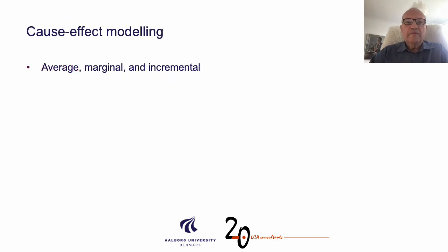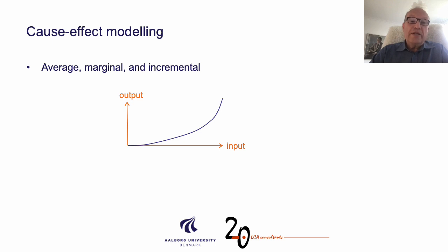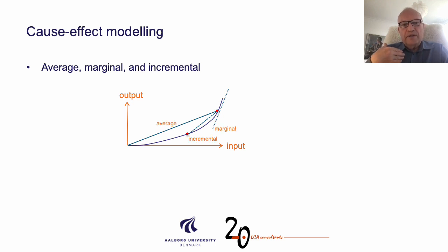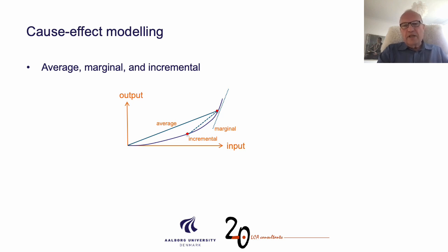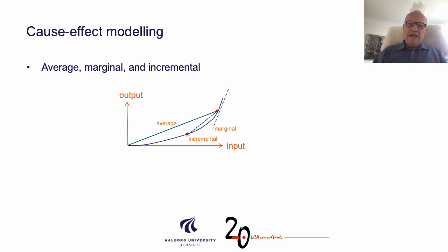When we talk about cause-effect modeling of average, marginal, or incremental changes, we can illustrate that with a graph that shows the relation between inputs and outputs as a nonlinear curve. The average is a line between zero and the operating point, while the marginal is the tangent to the curve. The incremental is the line between the operating point before the change and the operating point after the change. When you have a small scale change, you can use the marginal. With larger changes, you need to take into account that the curve will have a different slope. The average is only relevant when you are really looking at the average situation, which is not relevant for changes at all.